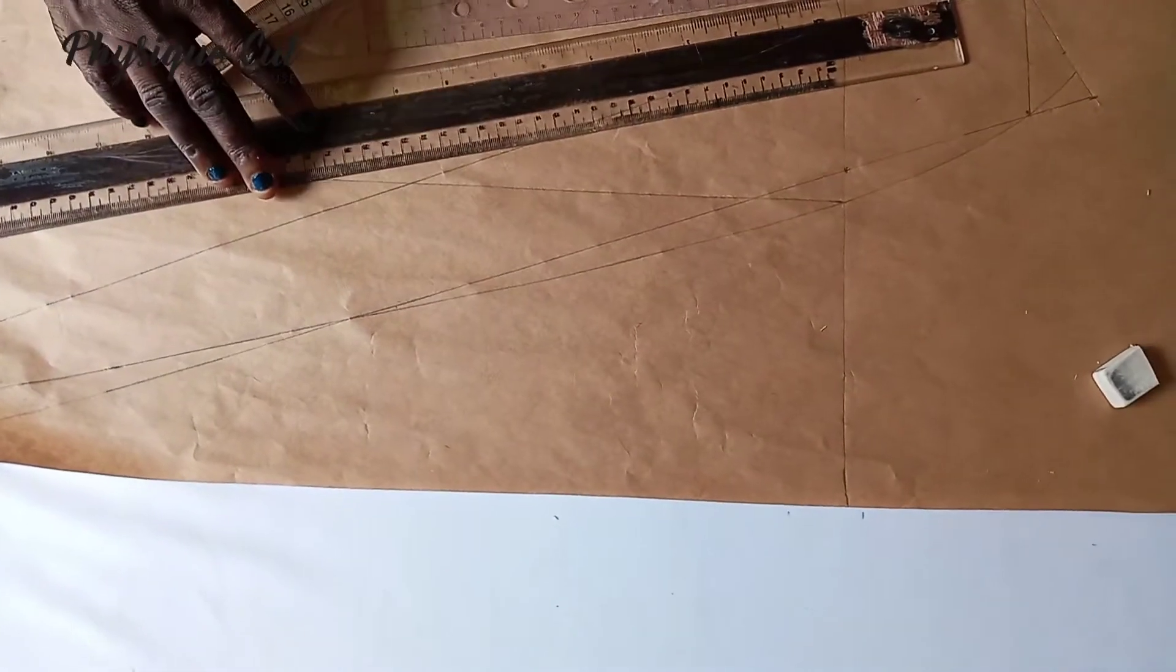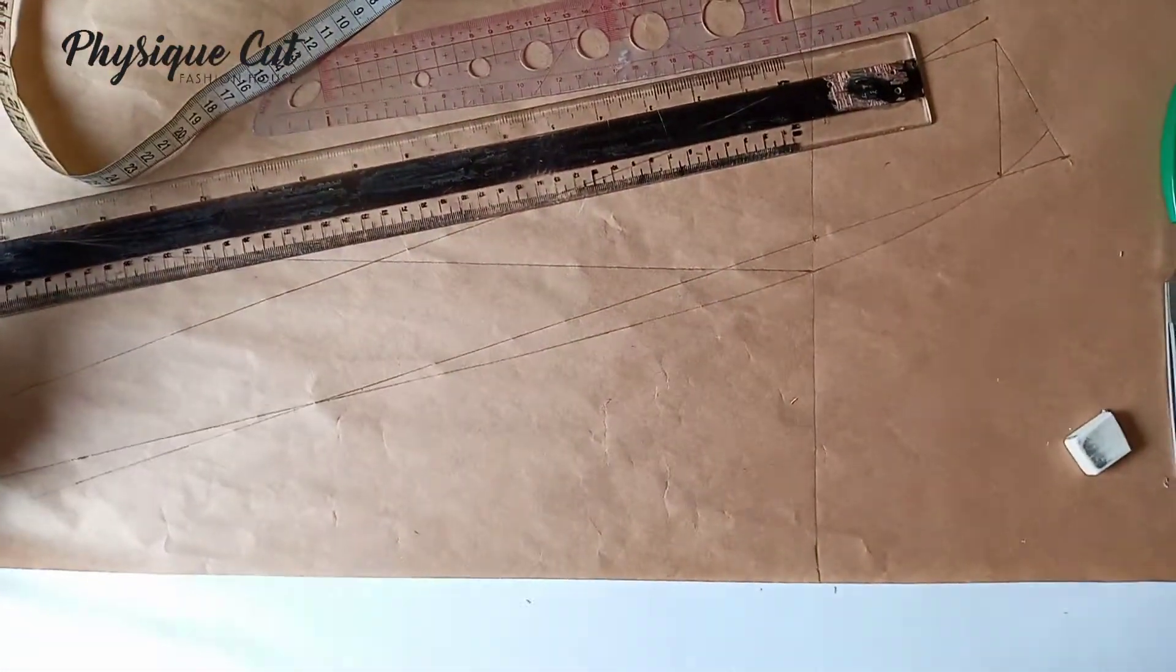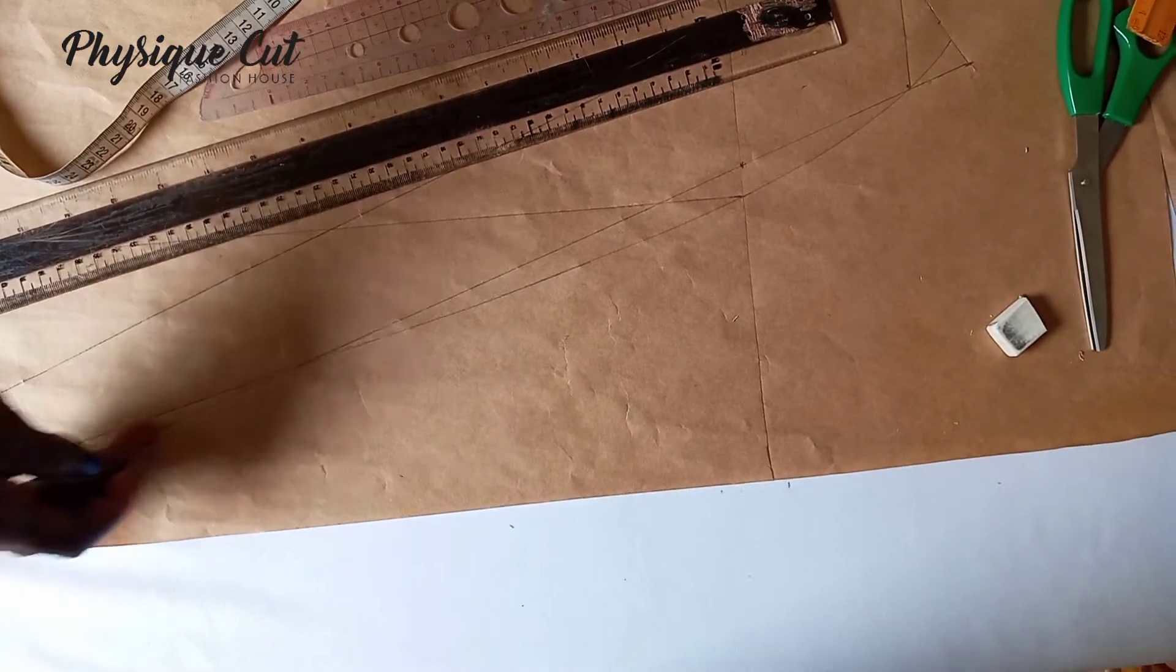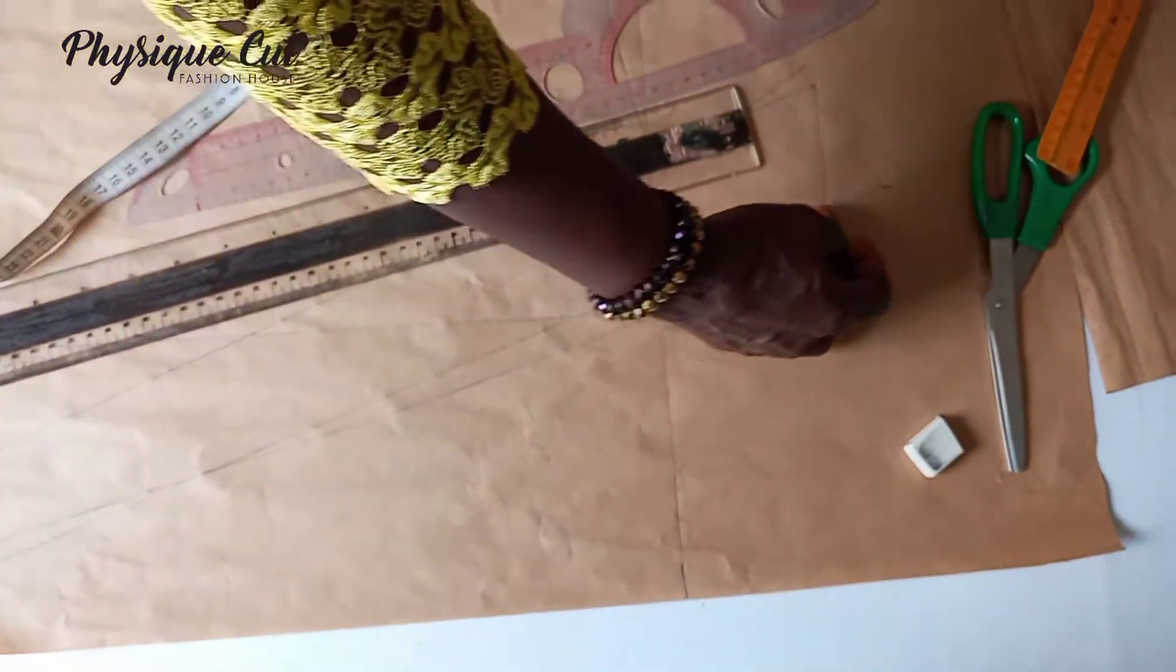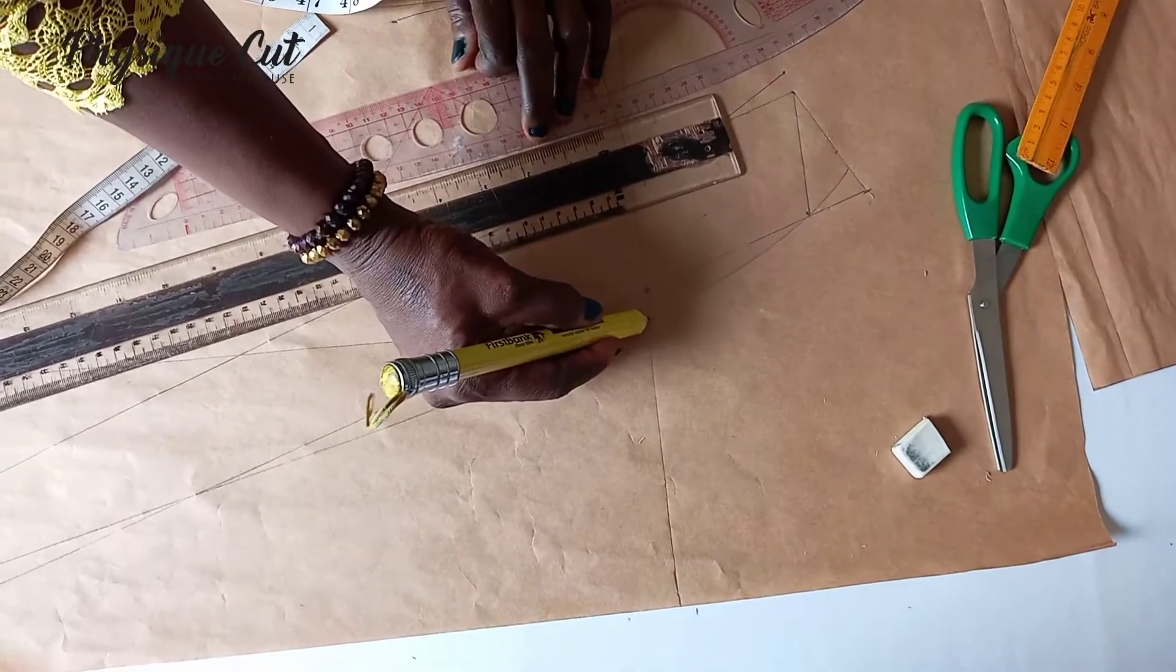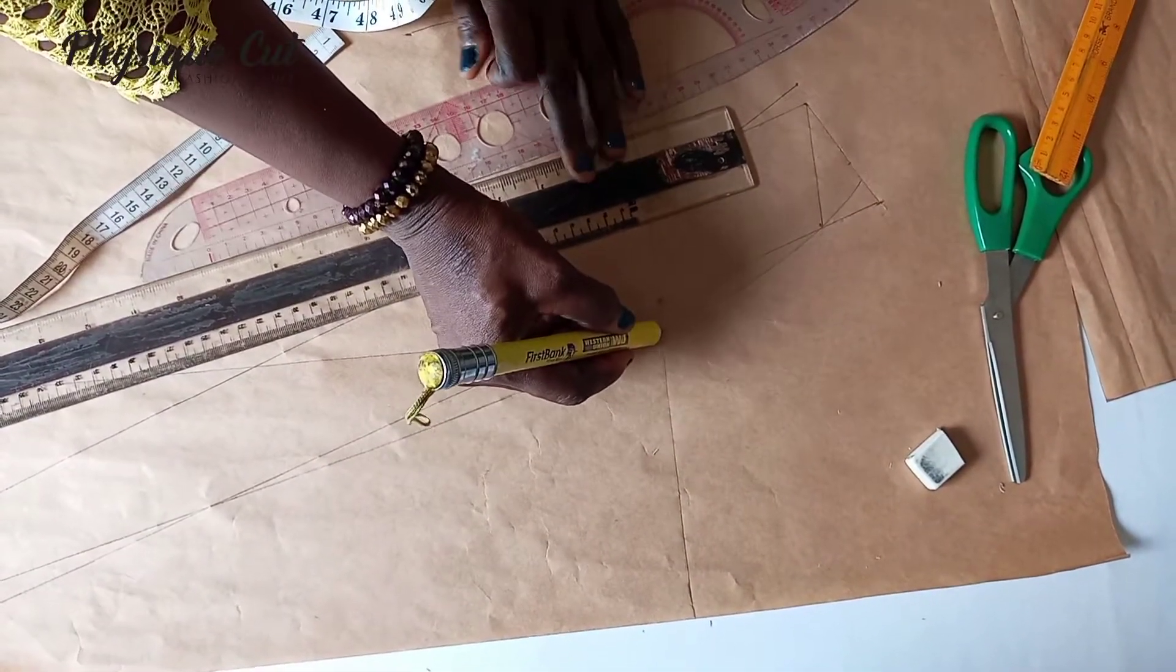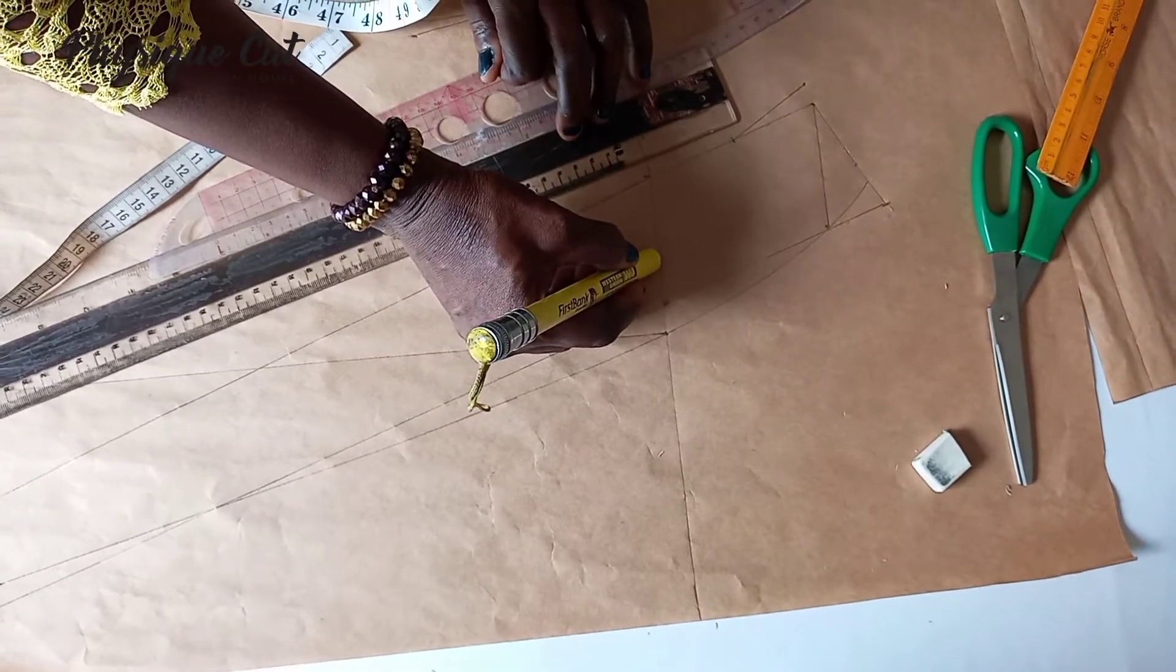So now, the way we are going to cut it out, it's going to be from here, from this point. Then we come out like this. Then this is the point we are going to give it the notch. We are going to notch it, we are going to open it here by like one and a half or two.